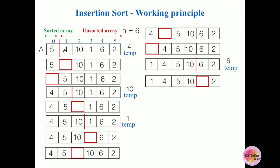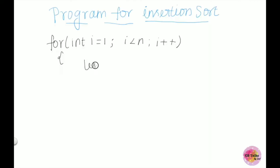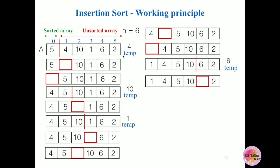We take the element from the unsorted array and place it in a temp variable: temp = a[i]. Then we compare temp with elements of the sorted array, scanning from right to left. The inner loop index j starts at i minus 1 — when i is 1, j is 0; when i is 3, j is 2.